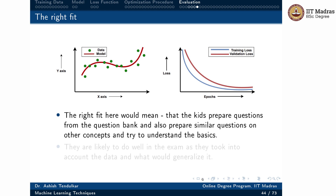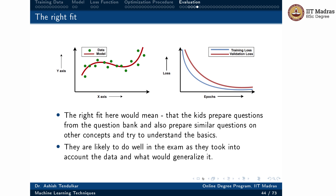The right fit analogy: kids prepare questions from the question bank and also prepare similar questions on other concepts to understand the basics — a holistic way of looking at the syllabus. Naturally they are likely to do well in the exam. Same with the machine learning model: a model of right capacity does not overfit to the training data but tries to generalize based on the available training examples, which is reflected in the learning curve. Learning curves are something you have to keep a close eye on.